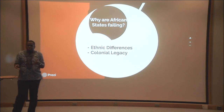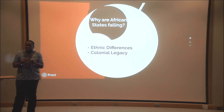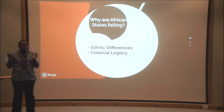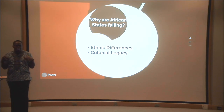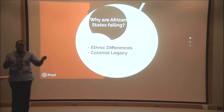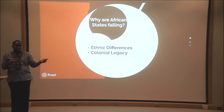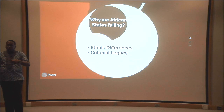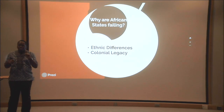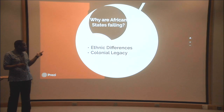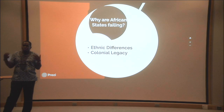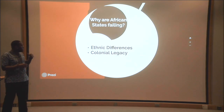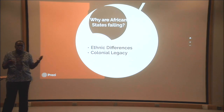When European countries drew borders for African states, they drew those borders between ethnic groups, forcing people together who were not together before and making them live under one government. A lot of people feel that if someone else is doing better, they're being discriminatory. So in many African states you see people trying to secede or take over through illegal means, which causes the state to become more unstable.